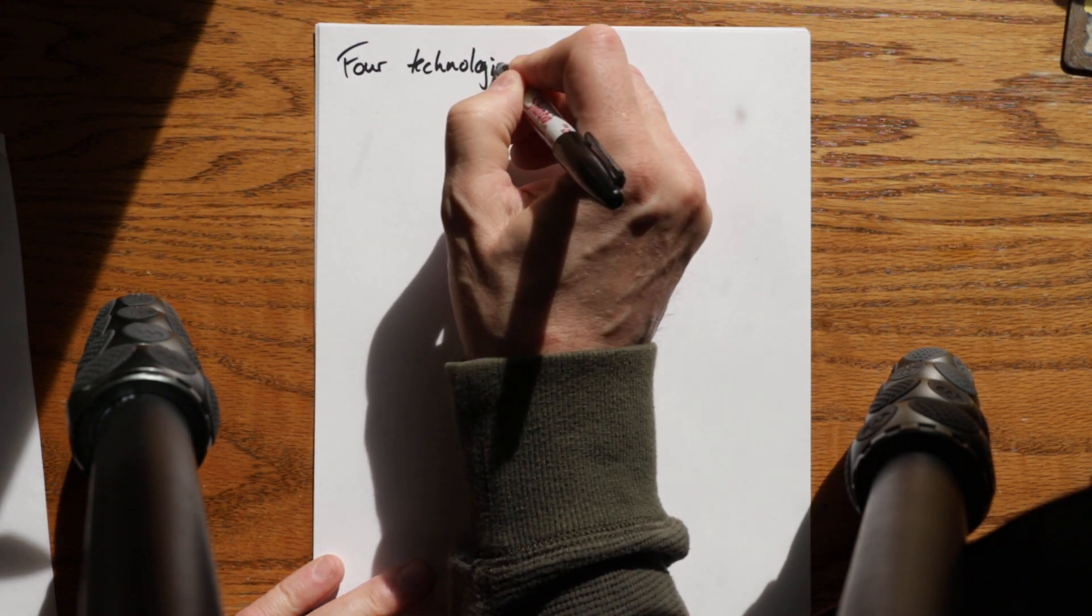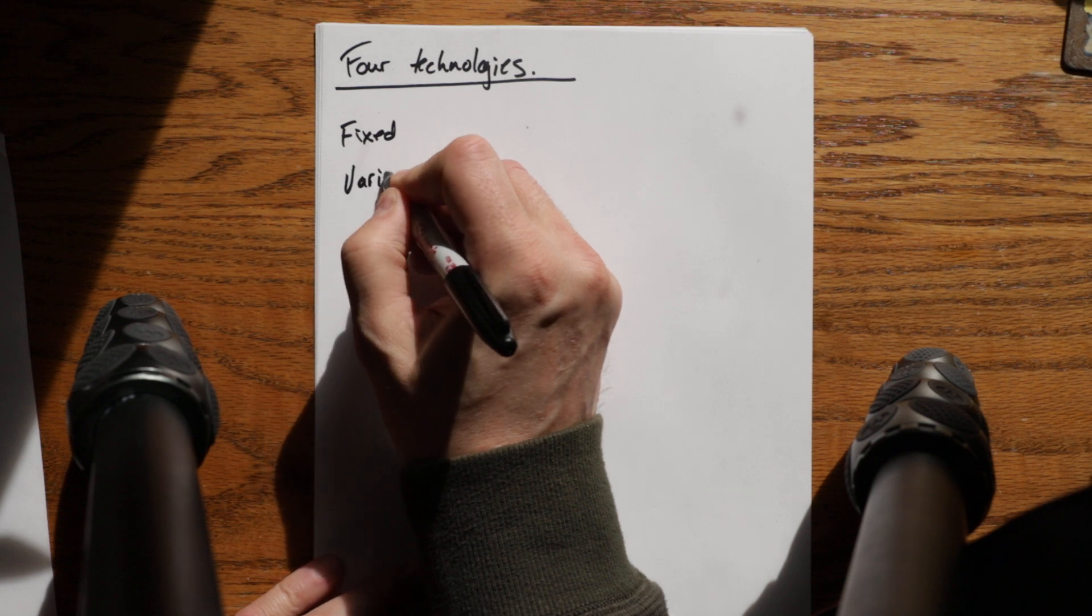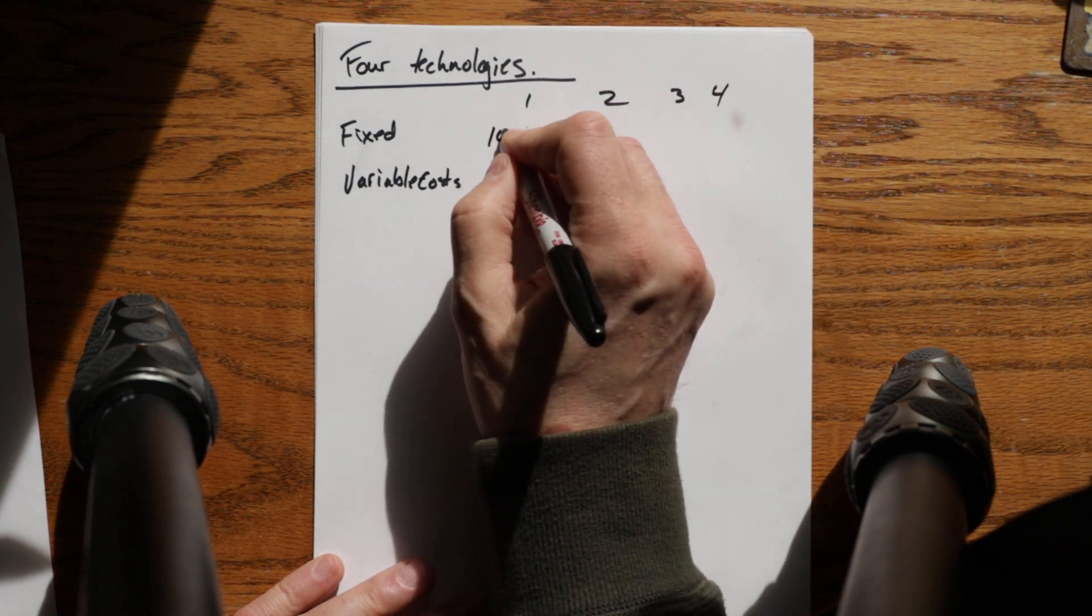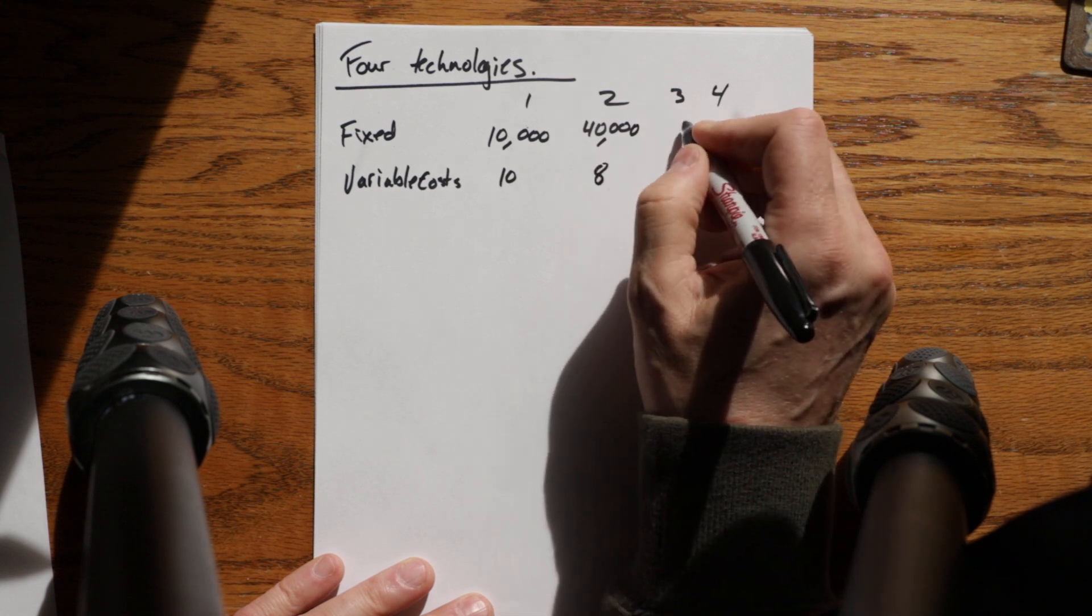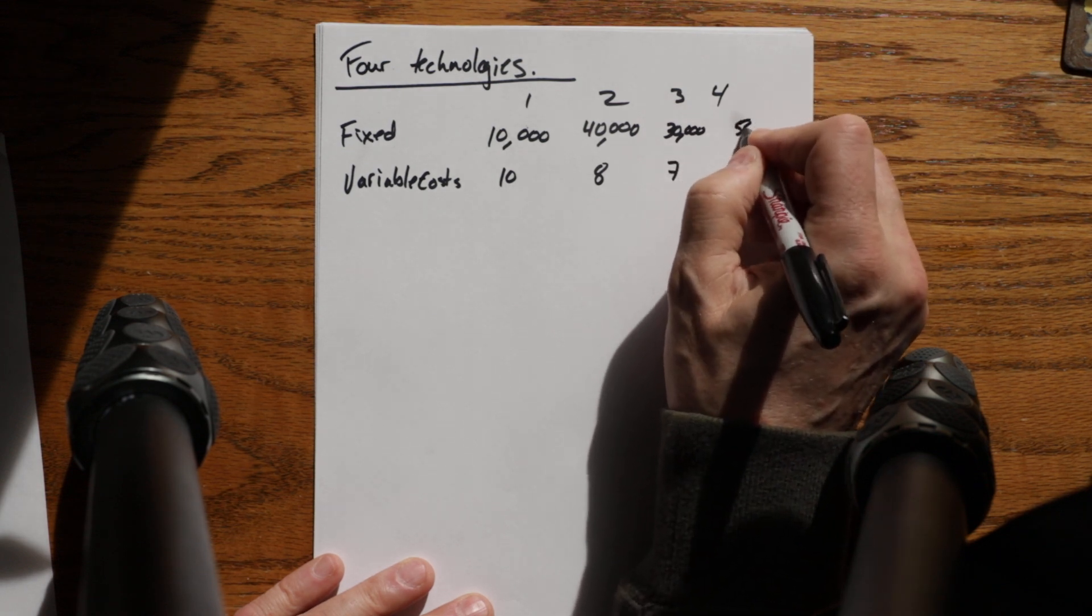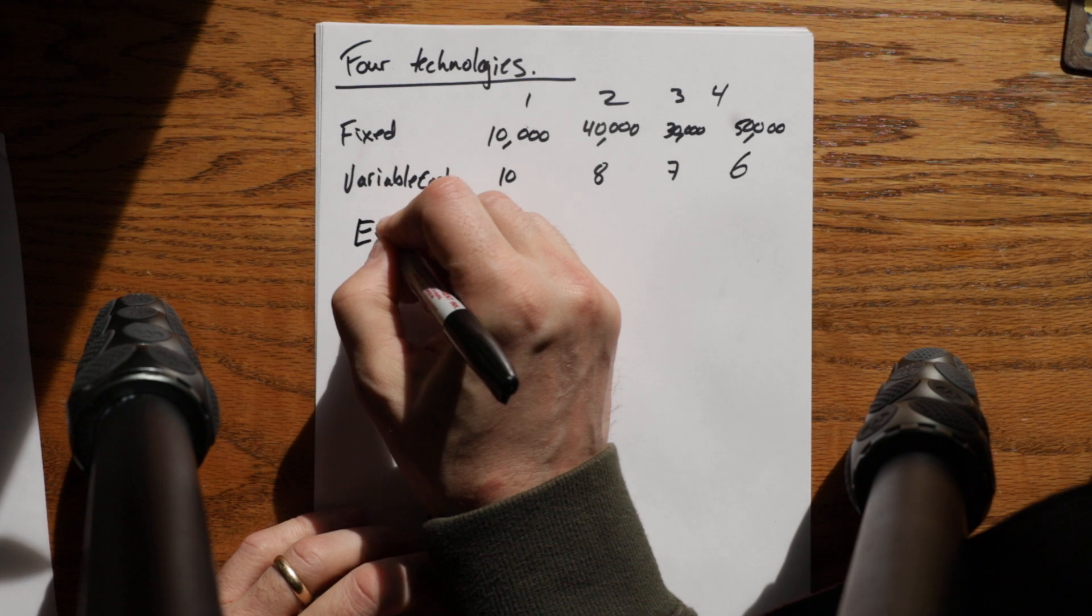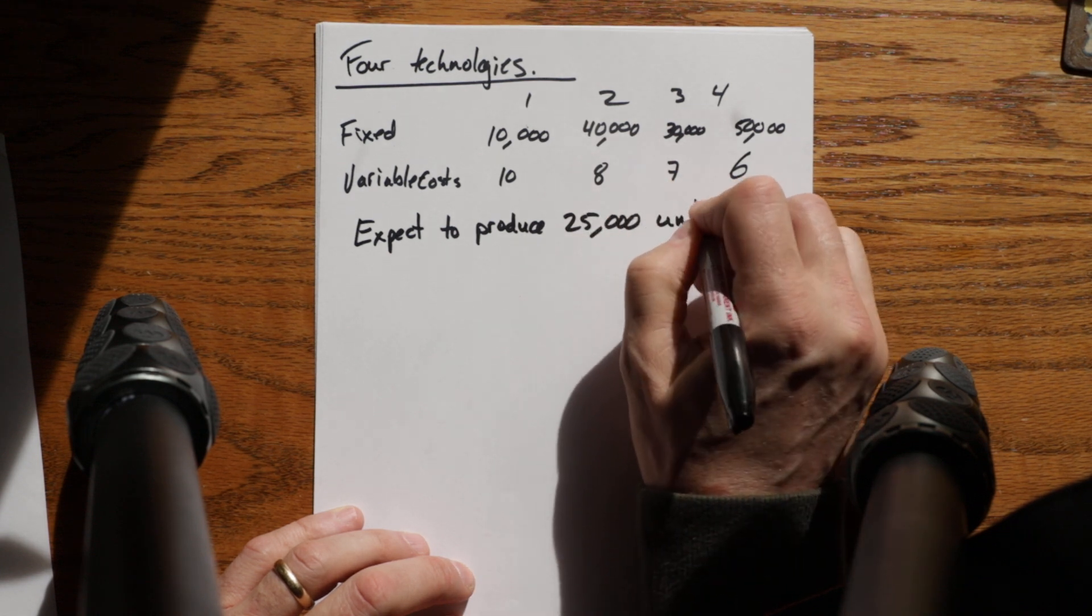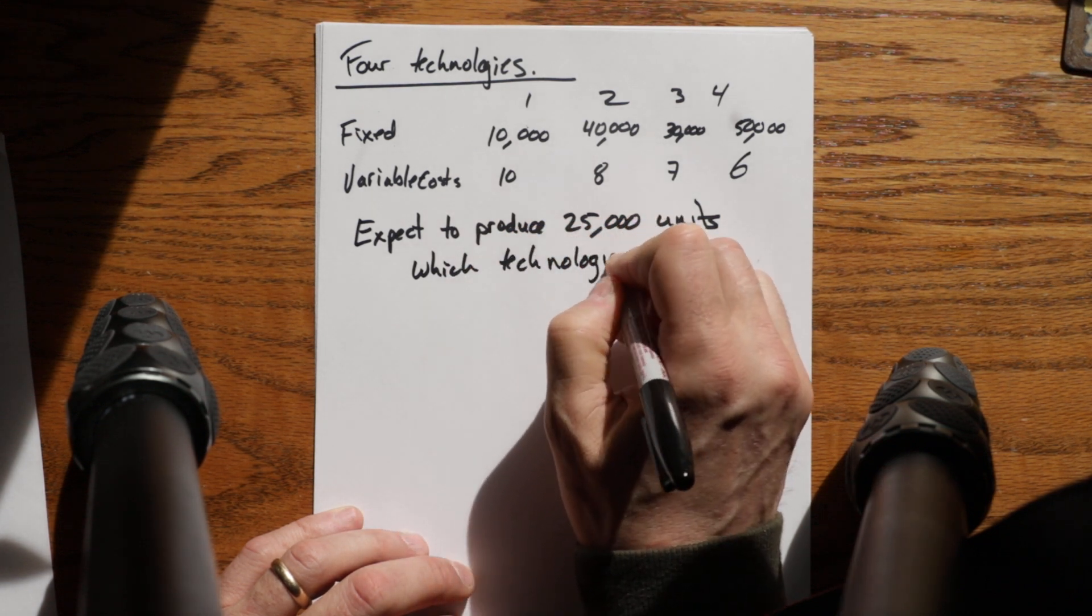Technology 1, 2, 3, 4: Fixed costs are $10,000 and $10 variable, $40,000 and $8, $30,000 and $7, and $50,000 and $6. The other information you need is you expect to produce 25,000 units. Which technology should you choose?